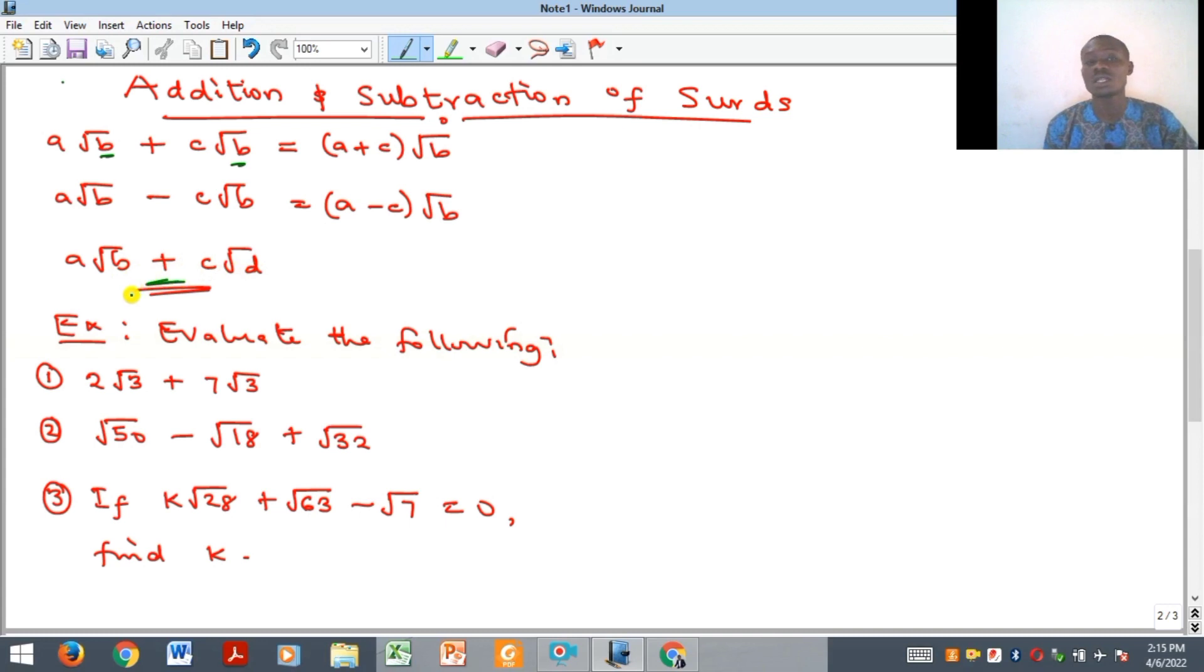And then in cases where you have the similar surds and you can actually simplify one of them or the two of them to get maybe similar surds, then that is also applicable. So all you need to do is to simplify and then see if you can get similar surds and then you get your solution. So quickly we are going to look at a few examples. The first example says we should evaluate the following.